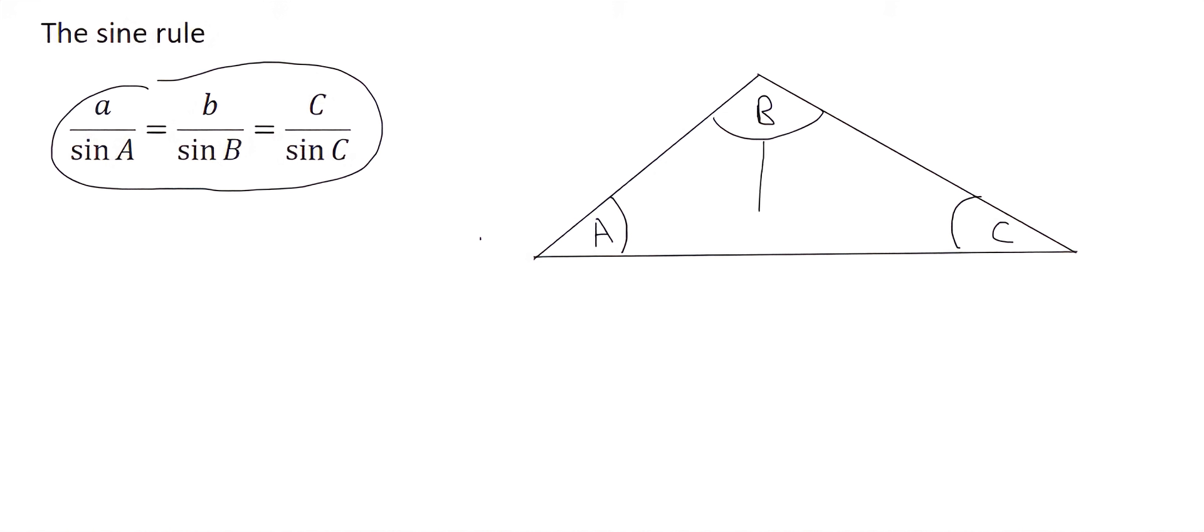The side that is opposite B, we will call that small letter b. Opposite A, that'll be small letter a. And then opposite C, well, that'll obviously be small letter c.